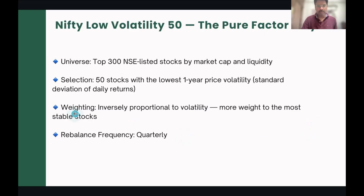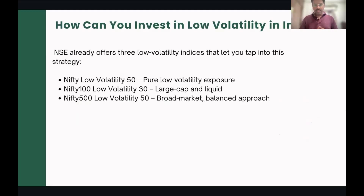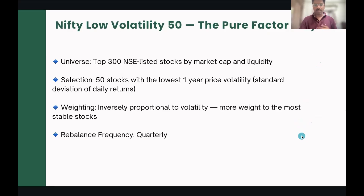The first index available in NSE is called NIFTY 100 Low Volatility 50. It takes the top 300 stocks in the NSE universe and constructs the low volatility index. The second is NIFTY 100 Low Volatility 30 — a large cap focused low volatility index. The third is NIFTY 500 Low Volatility 50, the broad market index including large, mid, and small cap, picking the top 50 stocks based on the volatility factor. Volatility is measured as the standard deviation of daily returns.